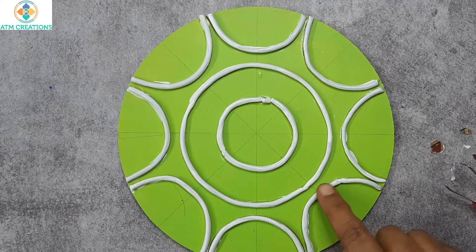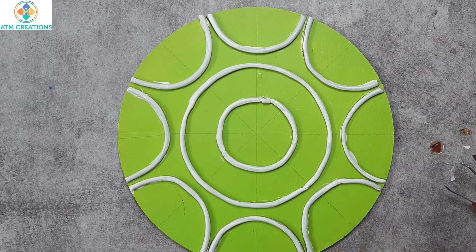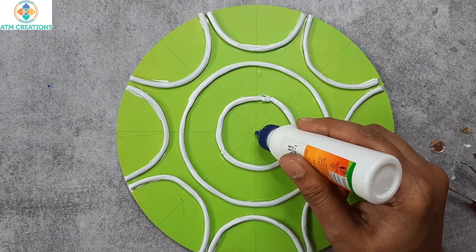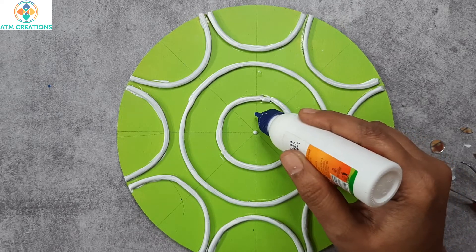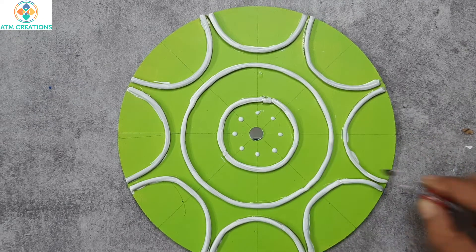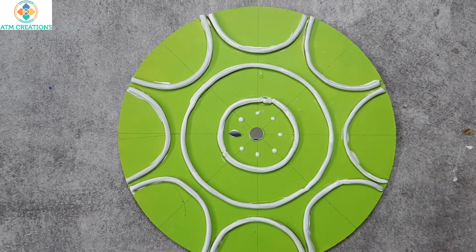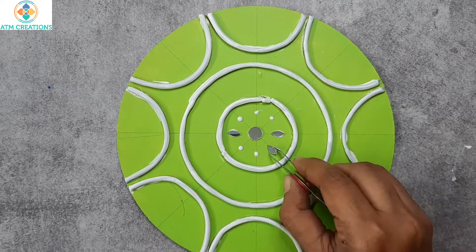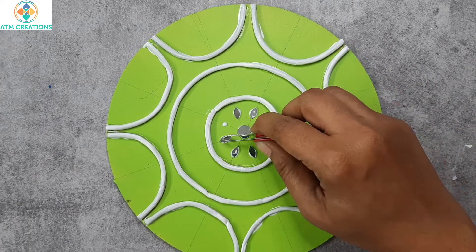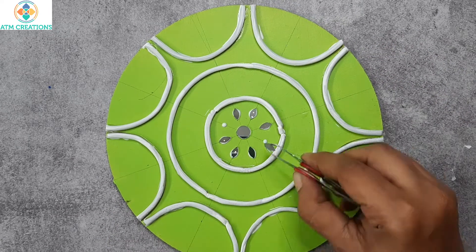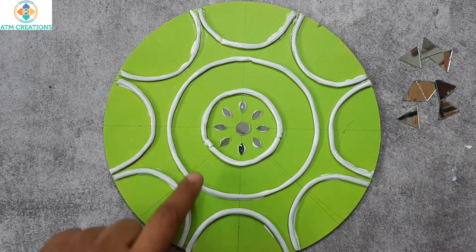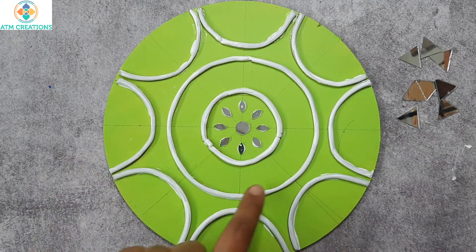Now that the paint on the clay is also dry, I can start placing the mirrors. In the center, I'm going to place a circular mirror and eye-shaped mirrors. I'll place triangular mirrors in all these places.